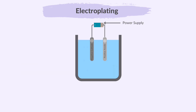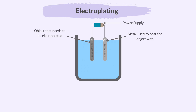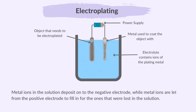Let's see how metals are electroplated. The negative cathode is the object that needs to be electroplated. The positive anode is the metal we are going to use to coat the object with. The electrolyte will be a solution of the metal we are going to use to coat the object — that is, the electrolyte contains ions of the plating metal. Metal ions in the solution deposit onto the negative electrode, while metal ions are released from the positive electrode to fill in for the ones lost in the solution.